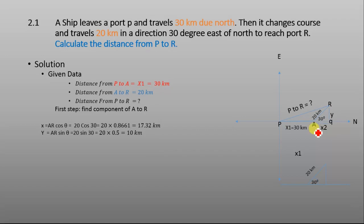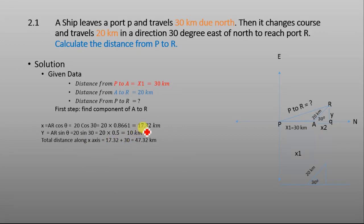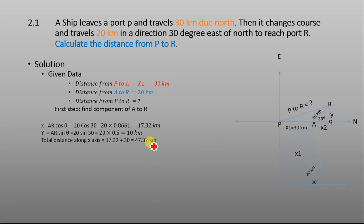Now we add the x-components to get the total distance from P to Q: 17.32 plus 30 kilometers equals 47.32 kilometers. So the total horizontal distance from P to Q is 47.32 kilometers, and the vertical distance from Q to R is 10 kilometers.